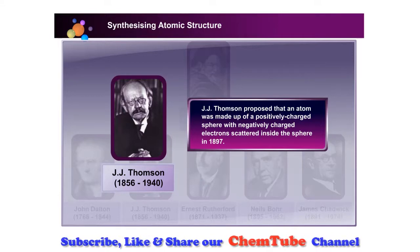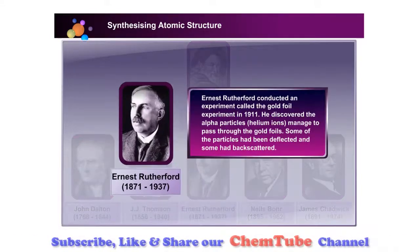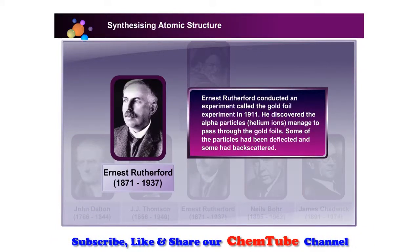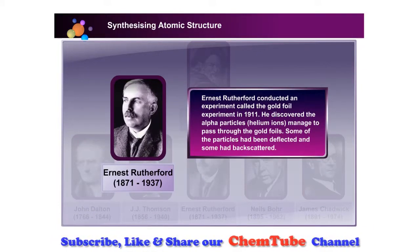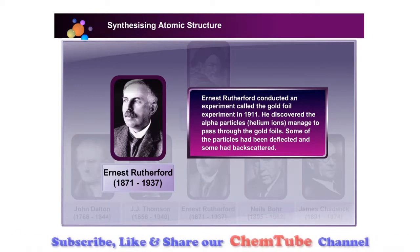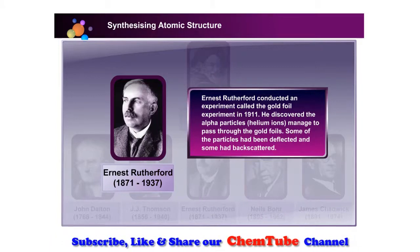J.J. Thomson proposed that an atom was made up of a positively charged sphere with negatively charged electrons scattered inside the sphere in 1897. Ernest Rutherford conducted an experiment called the gold foil experiment in 1911.